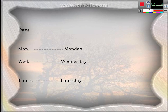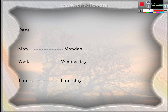Now another kind: abbreviations of days. We have three examples. M-O-N — Mon. — abbreviation of Monday. W-E-D — Wed. — abbreviation of Wednesday. T-H-U-R — Thur. — abbreviation of Thursday. These are examples of abbreviations for days.